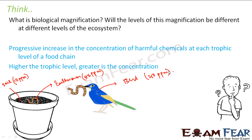This concentration becomes so high that the bird can even die. So if you look at the food chain here, the bird is at the highest trophic level. The higher the trophic level, the higher is the concentration of the chemical. And this increase in the concentration of chemicals is known as biological magnification.